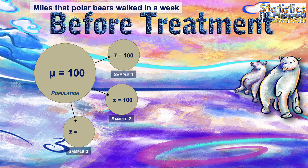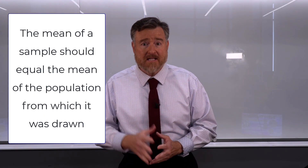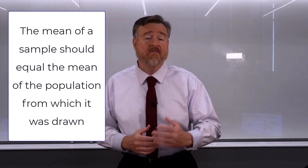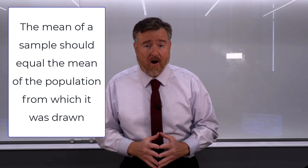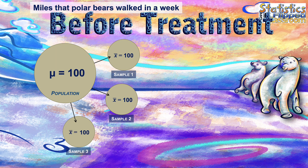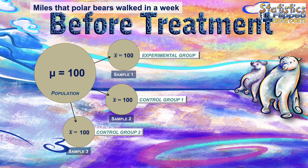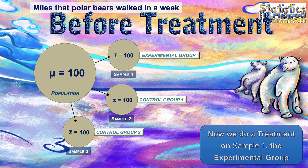Now we draw a third sample — same question. How many miles per week is that sample of polar bears going to walk? Knowing that the mean of the sample should equal the mean of the population from which it was drawn, this third sample will walk, on average, 100 miles per week. We now have three samples drawn from a population with a mean of 100, and each sample contains the same mean as that population.